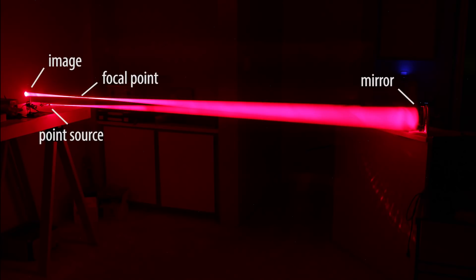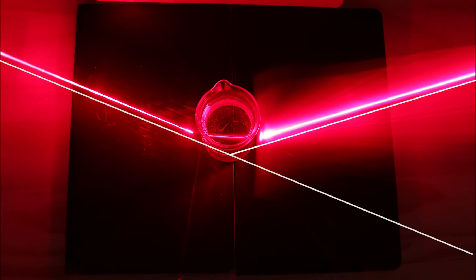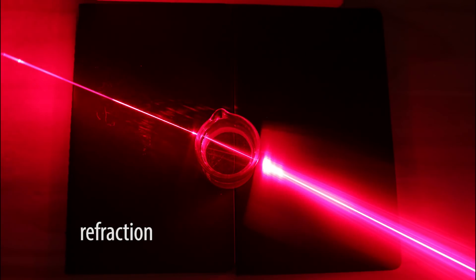Before we go any further, we need to understand how Schlieren systems actually work. Schlieren systems operate on the principle of refraction, that light will bend when passing through media of different density.